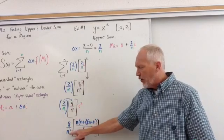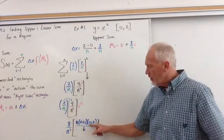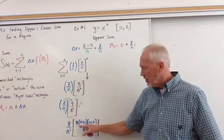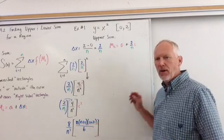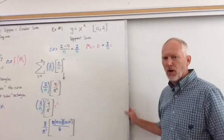So we get 8 over n cubed. And then here's i squared, if you recall. This is n times n plus 1 times 2n plus 1 divided by 6.